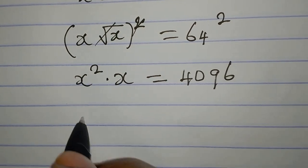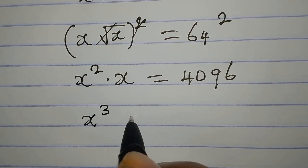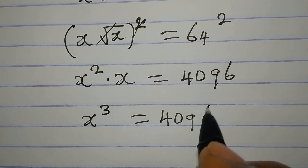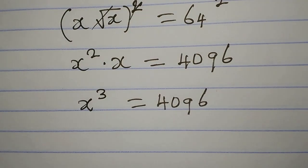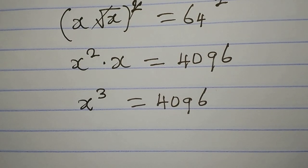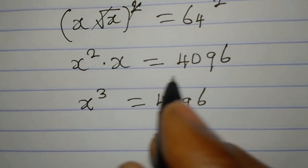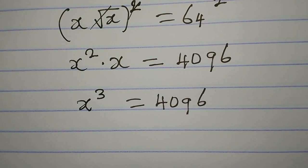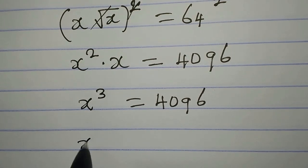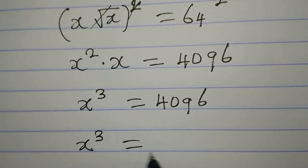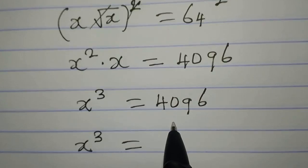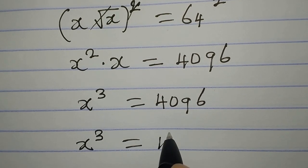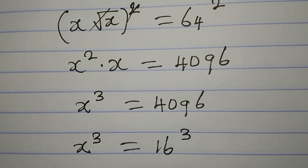x squared times x gives us x to the power of 3, and this is equal to 4096. Now, 4096 can also be written as 16 to the power of 3, so our equation becomes x to the power of 3 equals 16 to the power of 3.